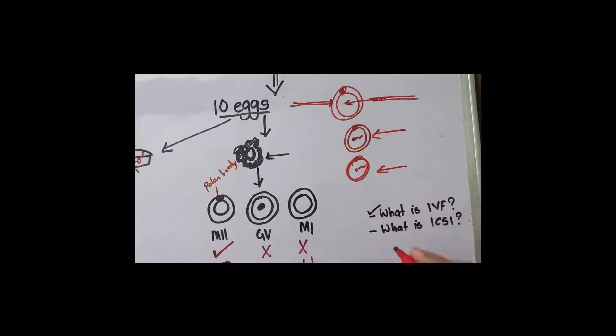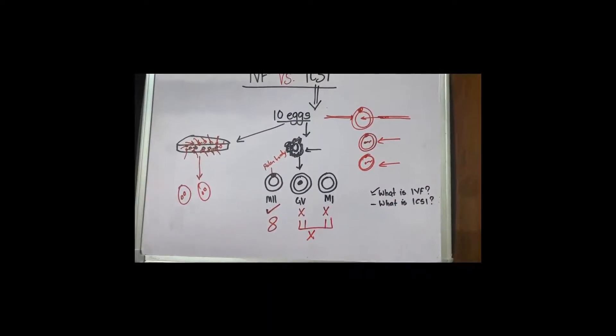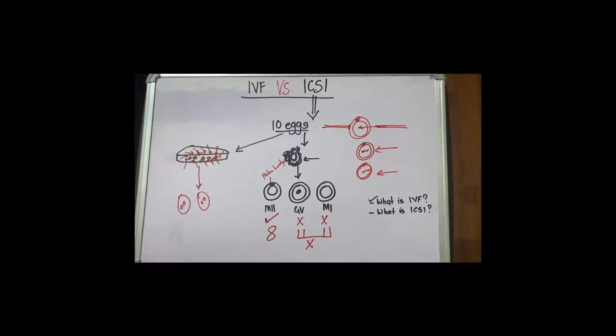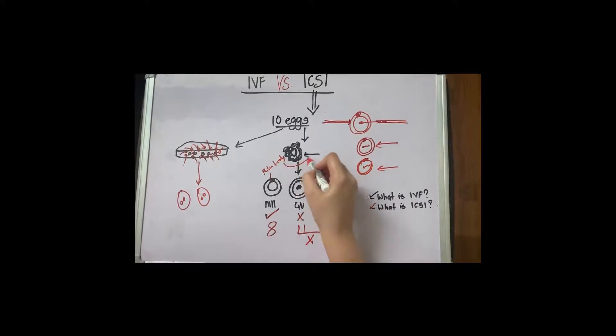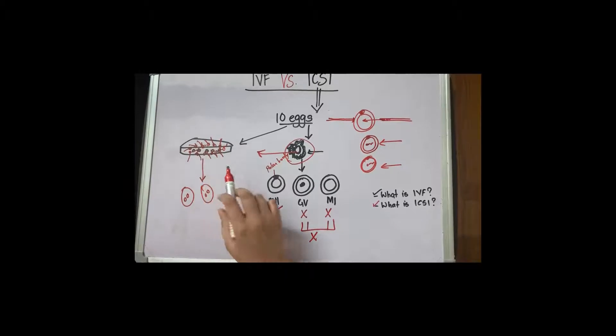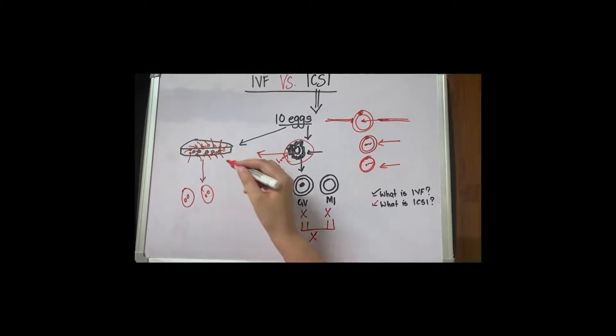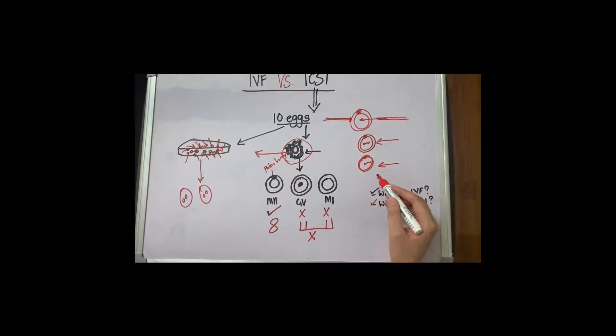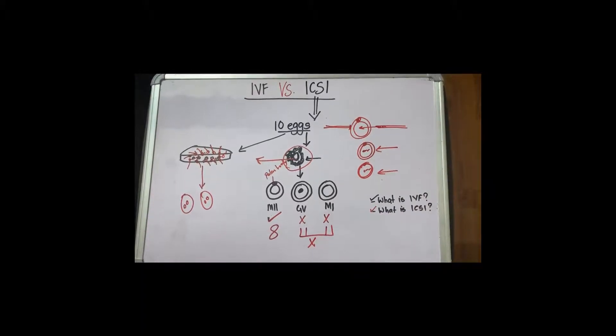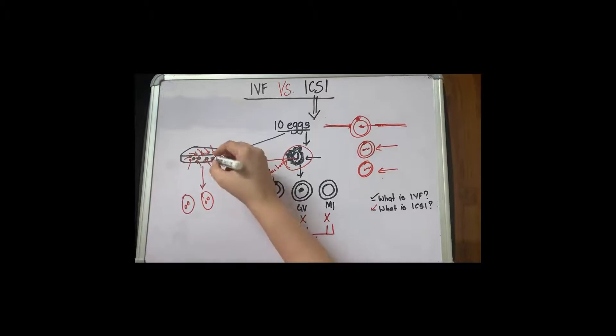I hope the basic difference is clear. In an IVF we do not strip them of the layer. We just directly put them, so we don't even know the number which is mature and here we do not have any role in selecting the sperm. Whereas in ICSI, I can manually search for a good sperm and then inject one sperm in one egg.